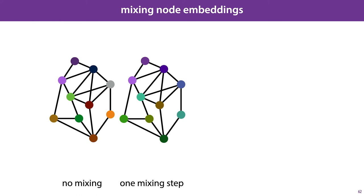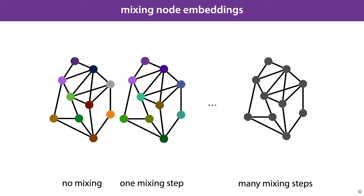After one mixing step, however, the node embeddings express something about the local graph neighborhood. A node that is close to many purple nodes will become slightly more purple itself. After many mixing steps, all nodes will have the same embedding, expressing only information about the entire graph. Somewhere in between, we find a sweet spot, where the embeddings express the node identity but also the structure of the local graph neighborhood.